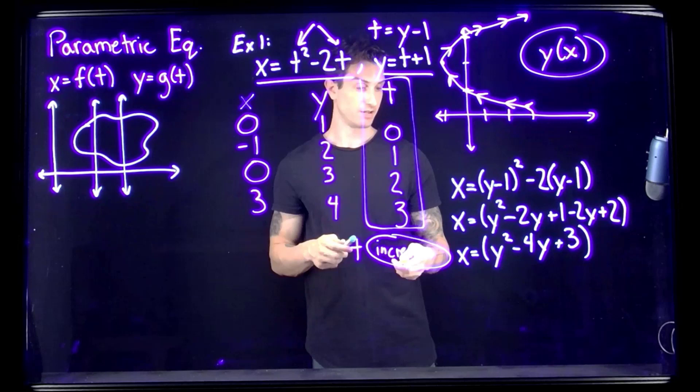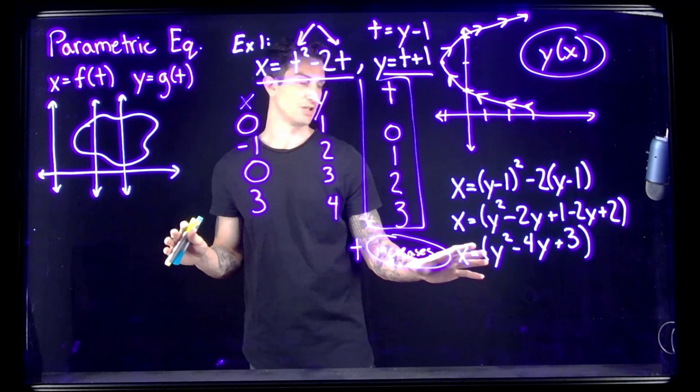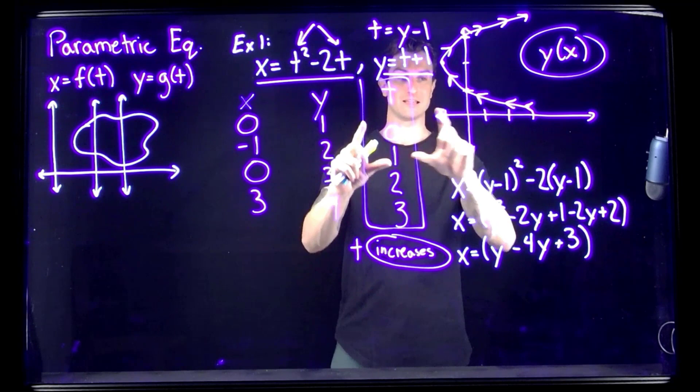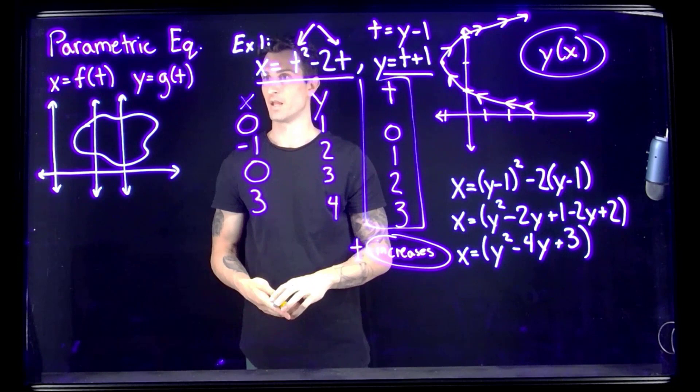So we end up with this sideways parabola in x and y. We also want to check for domain issues — are there any y values we can't plug in? In this case there are none, so you can just write 'none' in that section. When we switch to x's and y's we do lose the direction information, so it's helpful to have drawn the graph with arrows.